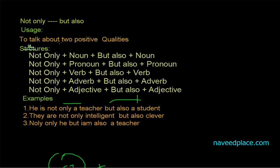If you have seen my previous lecture on 'both' or 'both...and', you may think that the usage of 'both...and' is the same as 'not only but also'. Actually the usage is the same but there is a little bit of difference.